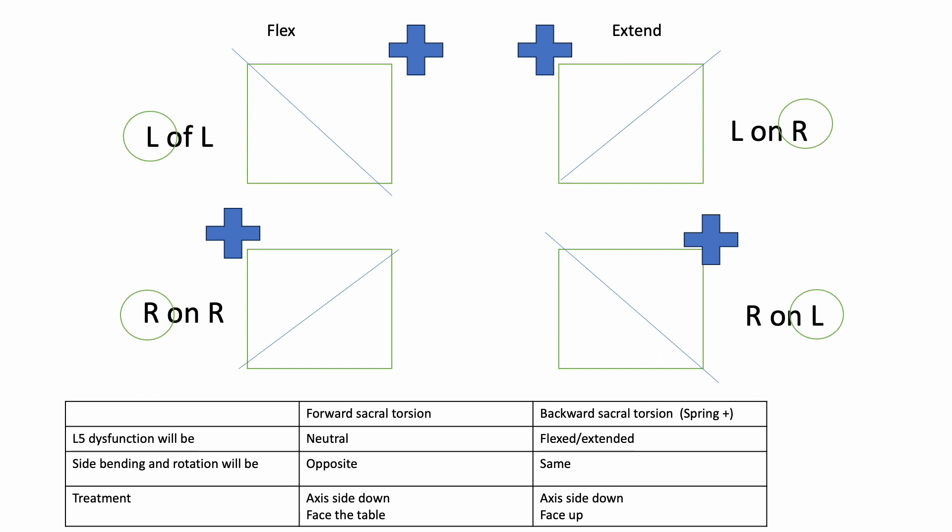It's going to ask you what is the L5 dysfunction. Essentially, it's going to be neutral, and the side bend and rotation are going to be opposite. For instance, you have a left on left, they're asking what L5 is going to be. Your answer is going to be neutral, side bend left, rotated right.